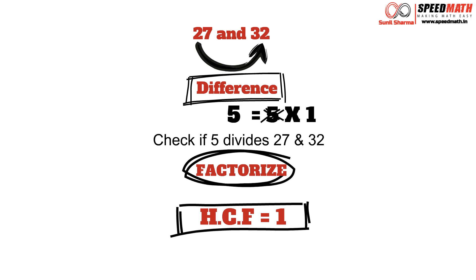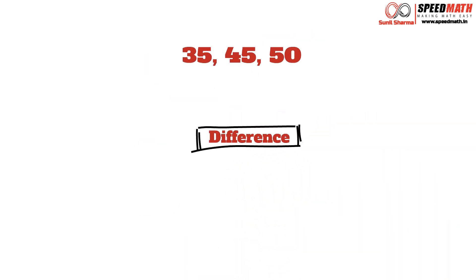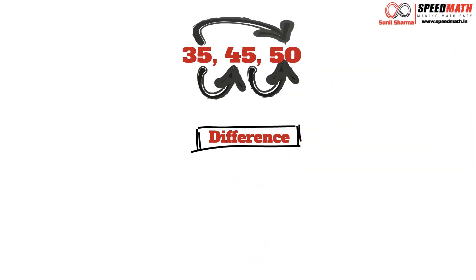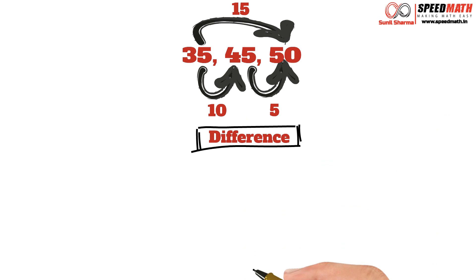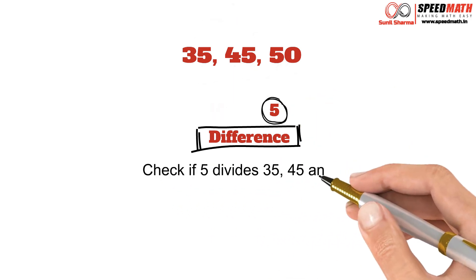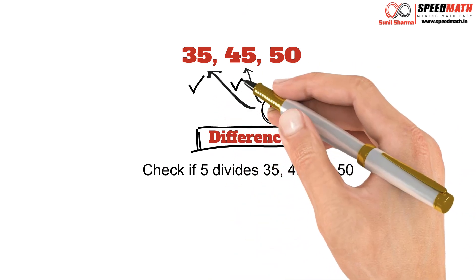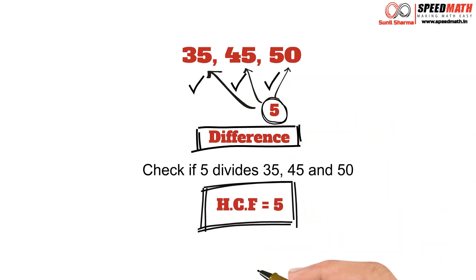Now let's take an example where we need to find HCF of 3 numbers. The example is 35, 45 and 50. Step 1: find the difference. There are 3 possible differences: 35 and 45 is 10, 45 and 50 is 5, and 35 and 50 is 15. We need to select the least difference, and the least difference is 5. Step 2: check if 5 divides all 3 numbers. 5 divides 35, 5 divides 45, and 5 also divides 50. Since 5 divides all 3 numbers, therefore the HCF is 5.